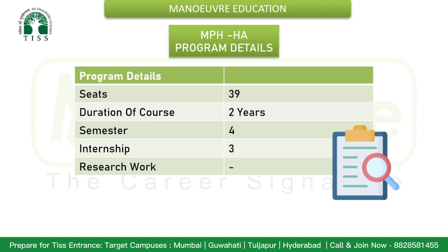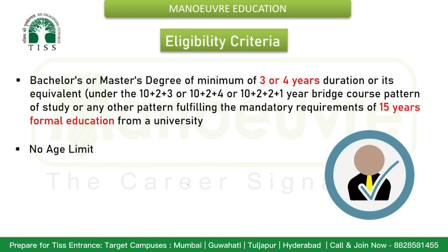Talking about basic program details: the number of seats is only 39, duration of the course is two years, with four semesters. There will be three internships. Regarding research work, no data has been properly disclosed on the official website. For eligibility, a candidate must hold a bachelor's or master's degree of minimum three or four years duration under the 10+2+3 or 10+2+4 or 10+2+1 year bridge course pattern, or any other pattern fulfilling the mandatory requirements of 15 years of formal education from any recognized university. There is no age limit criteria.